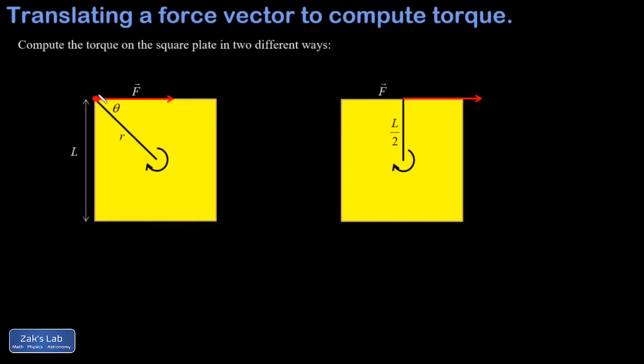That's going to be F sine theta, but that means we need to compute theta. Thankfully, I've made this situation as simple as possible by using a square, so this angle is 45 degrees, and I get F sine 45 degrees.